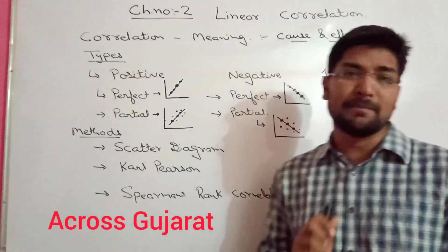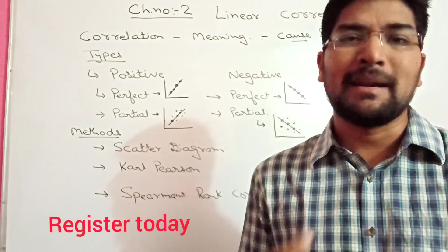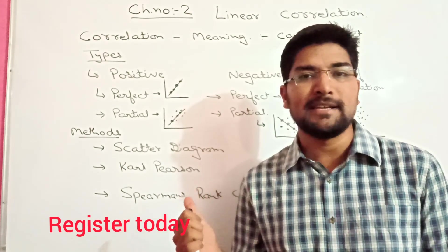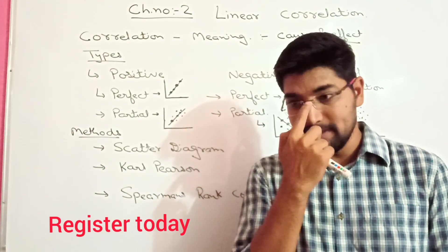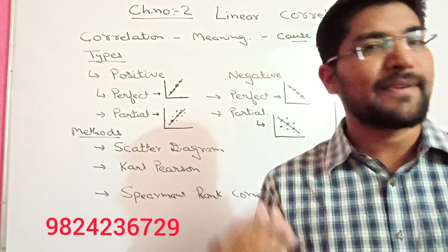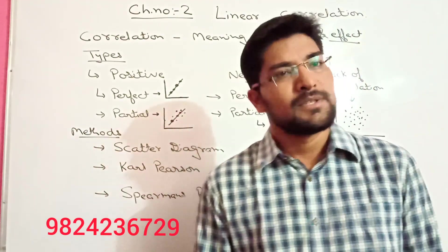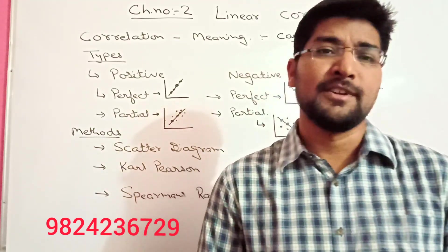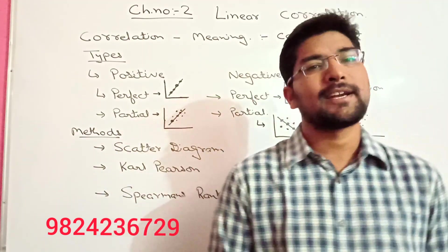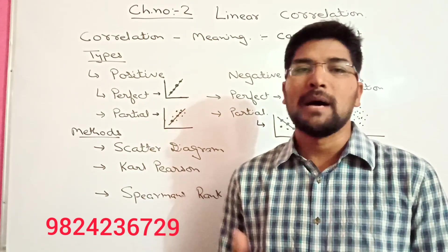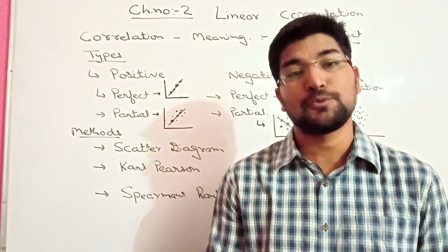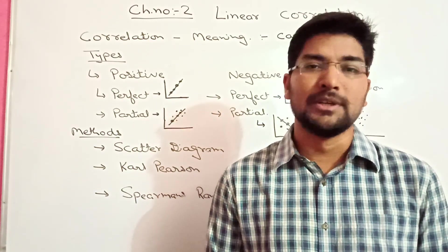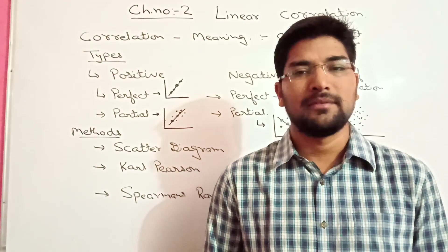So here we have three methods to study: scatter diagram, Karl Pearson method, and rank correlation method. We have learned the scatter diagram method here. Mostly scatter diagram questions come as simpler diagram-based questions in the exam — not usually in 3-marker or 5-marker questions. So the first method — scatter diagram — is done. You now have the definition and types of correlation. In the next lecture, we will go on to the Karl Pearson method. Okay, thank you.